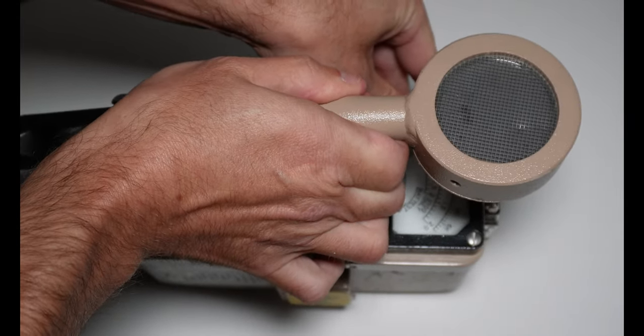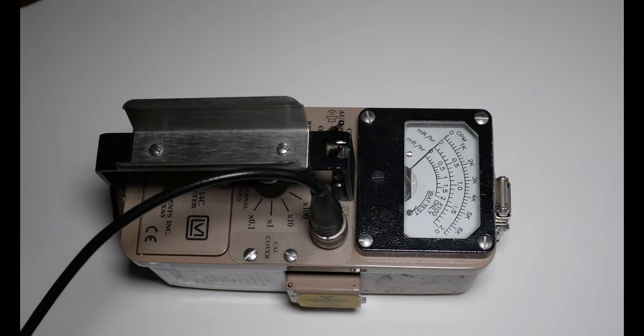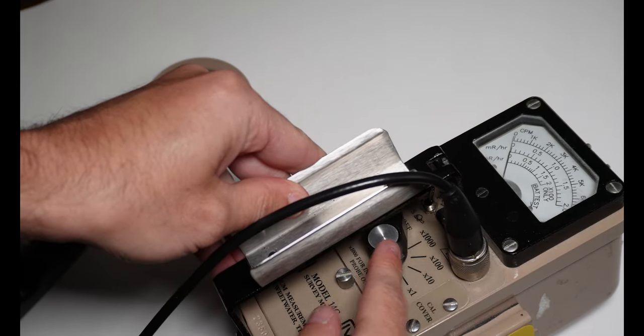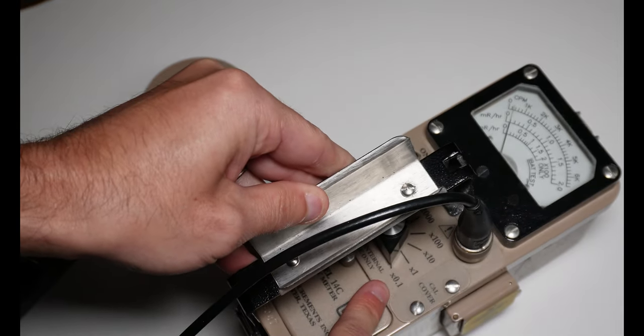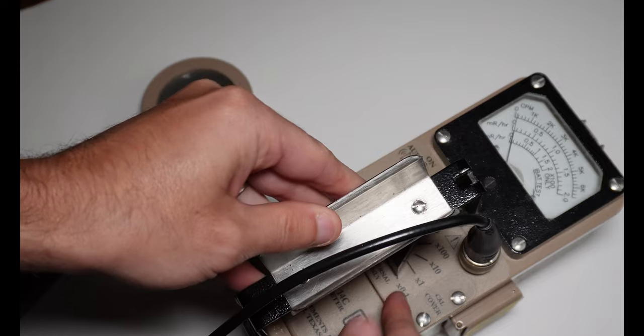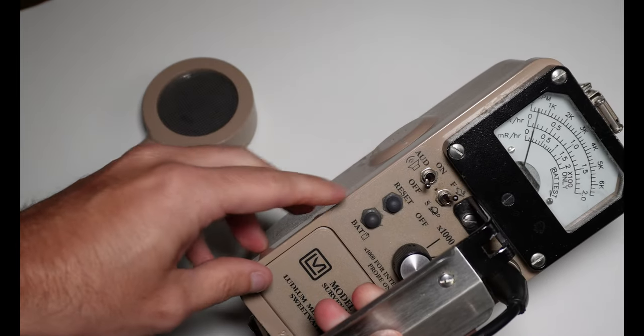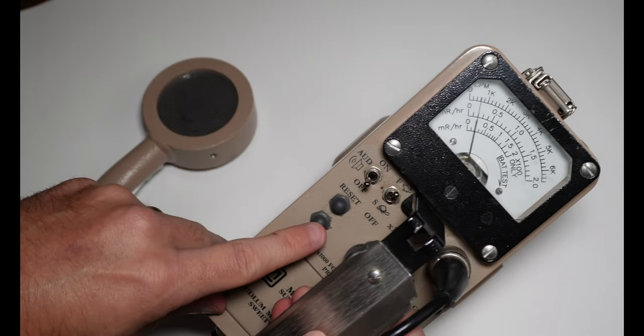So we're going to take the pancake detector off. To turn the Geiger counter on, you're going to turn the knob to the lowest range setting. So here we have it to 0.1. And then what we're going to do is we're going to flip it over and we're going to test the battery.